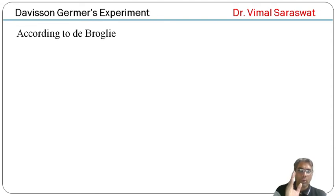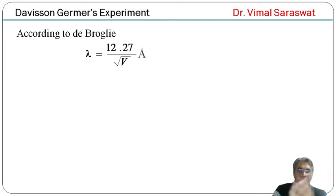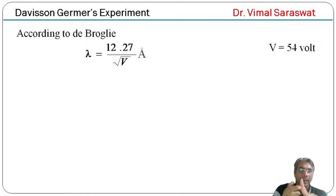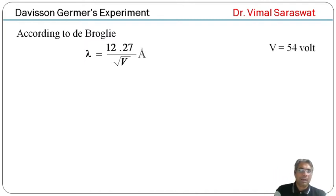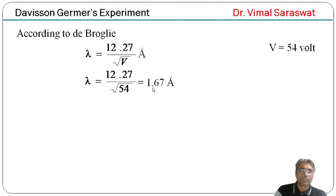According to de Broglie, wavelength lambda equals 12.27 divided by root V, in angstroms. Here V equals 54 V because at 54 V the bump or kink becomes maximum. So lambda equals 12.27 divided by root 54, which equals 1.67 angstroms.